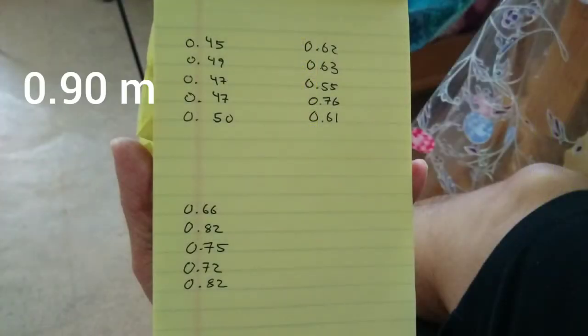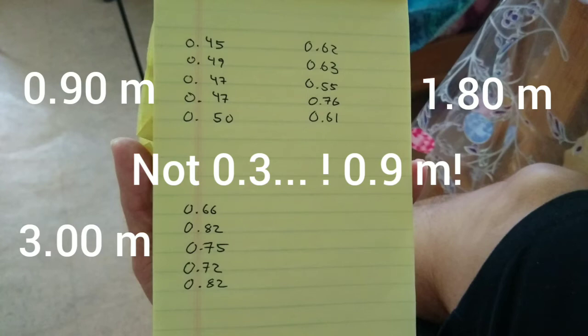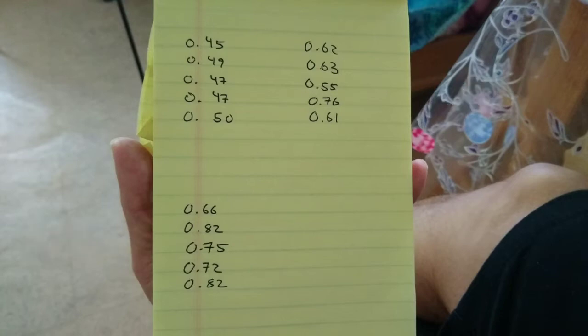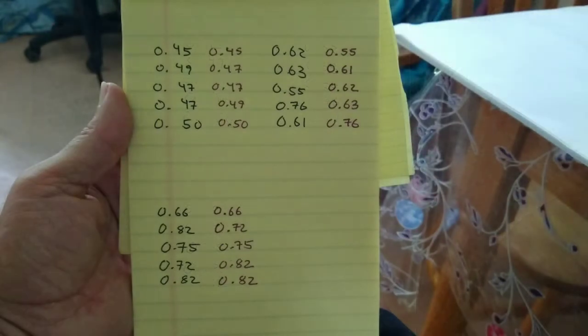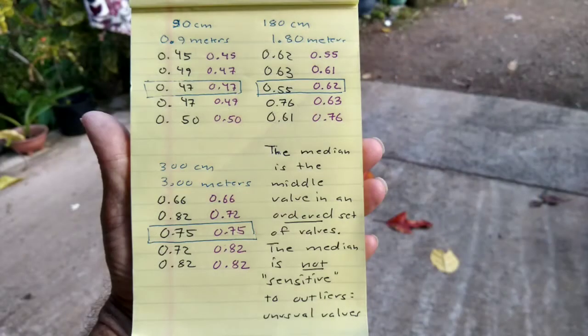Here you can see the times for five drops from three heights. From 0.3, 1.8, and 3.0 meters. I'll put these numbers in order from smallest to largest. And the middle number will be the median value. So here you can see in purple, I've rearranged my times in order from smallest to largest for the three different drop heights. The middle number of those numbers will be the median. The median is the middle value in an ordered set of numbers. And those can be seen here circled in the rectangle.